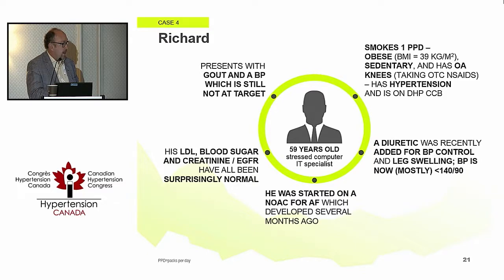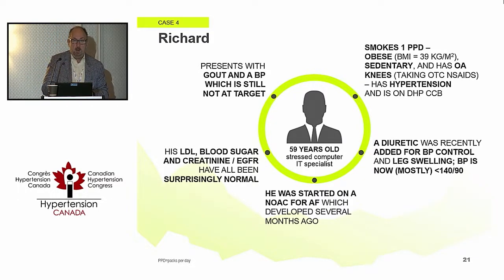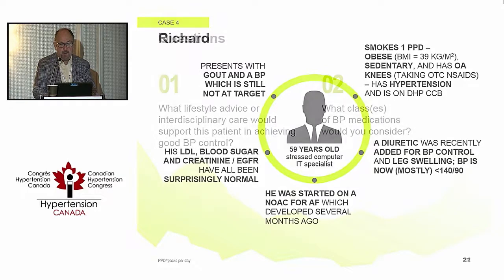LDLs have been okay, but now he presents with gout and blood pressure which is still not at target. What are the considerations for this more complicated patient in terms of lifestyle and health behavior advice, and what classes of drugs would you consider?